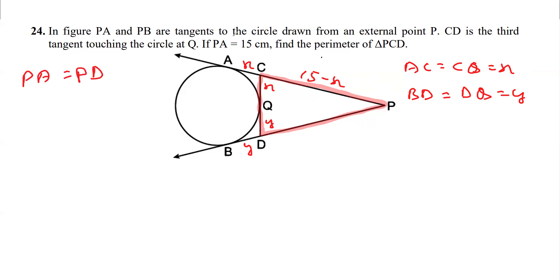PA is equal to PB, reason being tangent from same exterior point, which is 15. Now if BP is 15 and this is y, I can say that this is 15 minus y. That means I'm talking about this length DP.